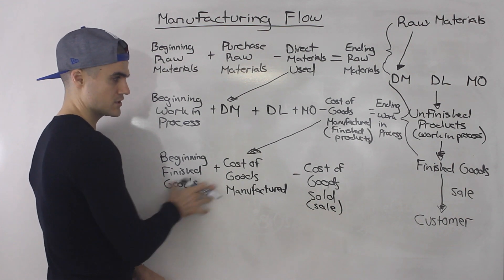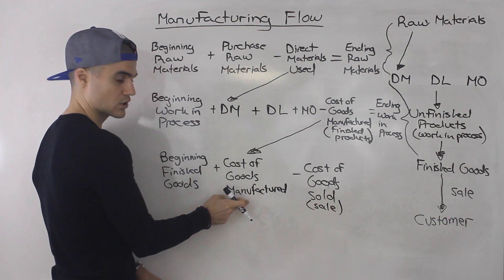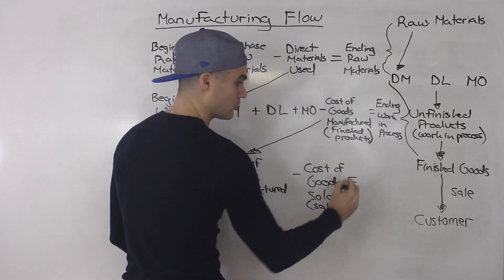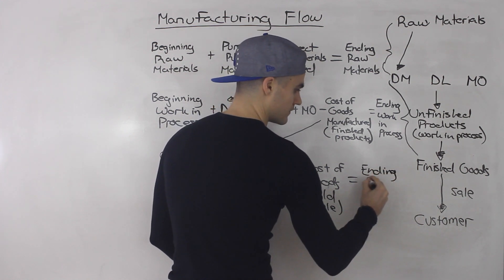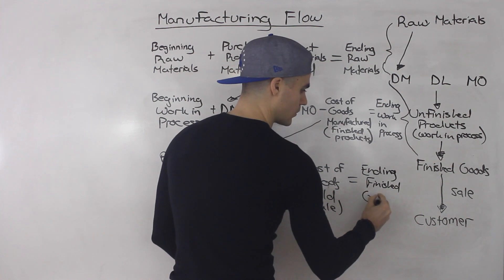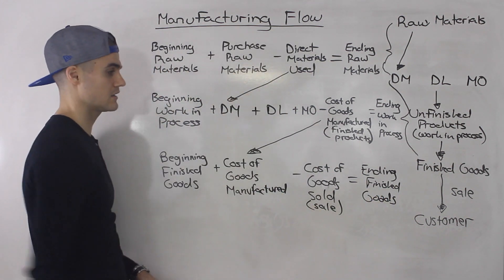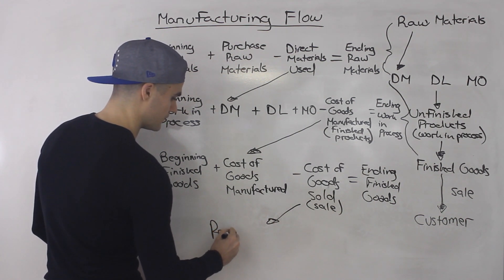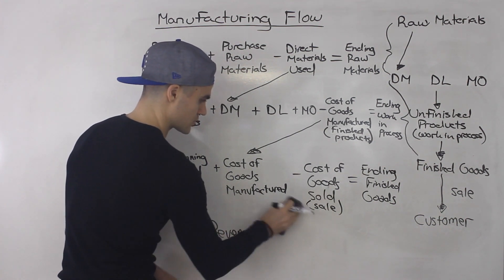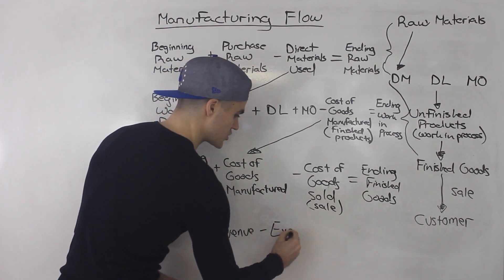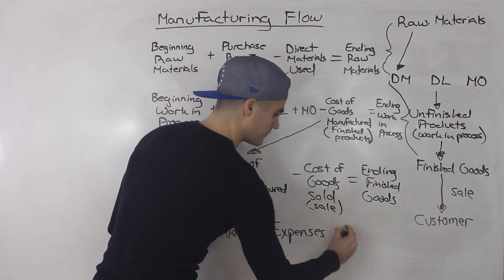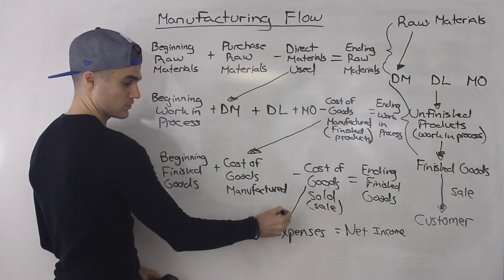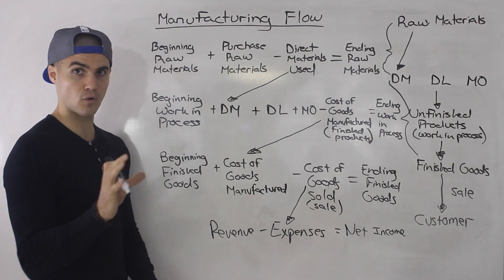So beginning finished goods, you're adding more finished goods from production in that period called cost of goods manufactured, you're selling some so they leave stock as cost of goods sold, and you end up with ending finished goods that become beginning finished goods in the next period. Those cost of goods sold simply go on the income statement. We have revenue minus expenses equals net income — the cost of goods sold flows into expenses on the income statement for that period.